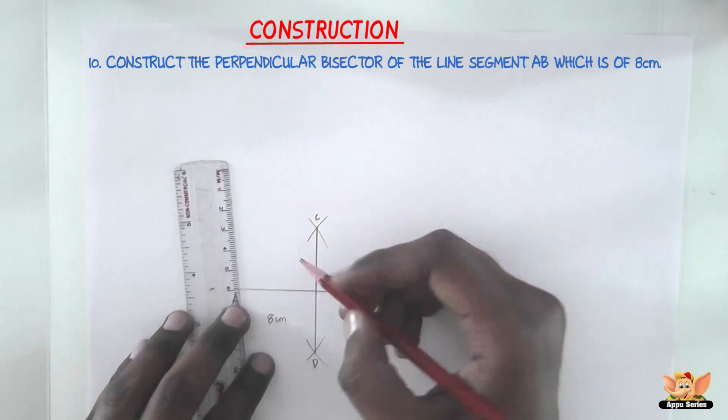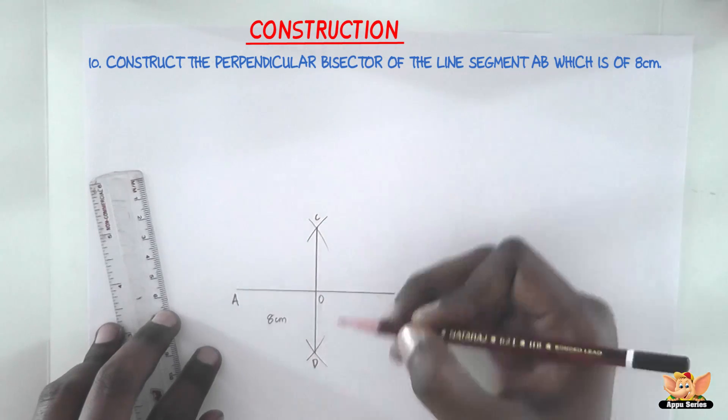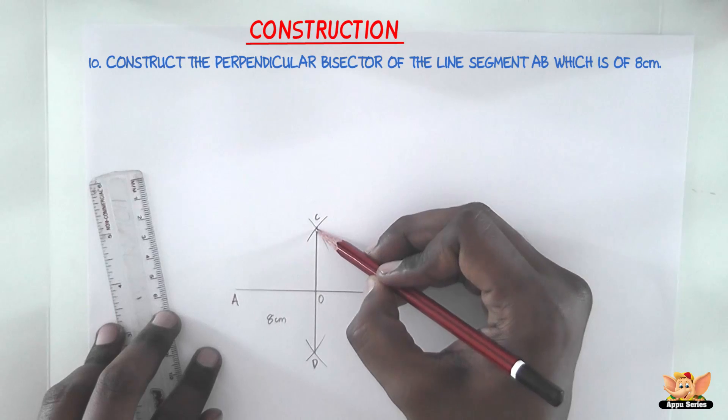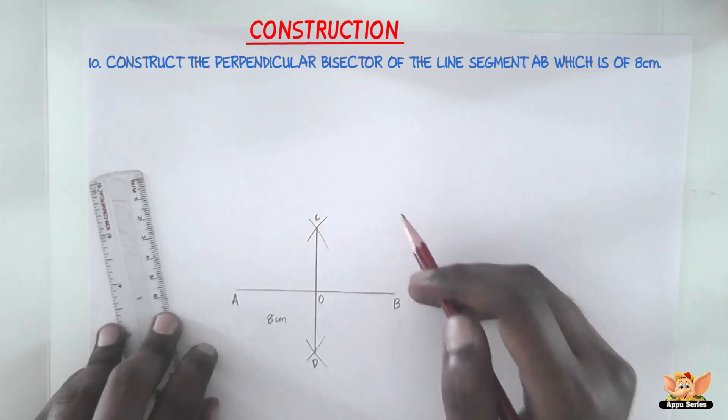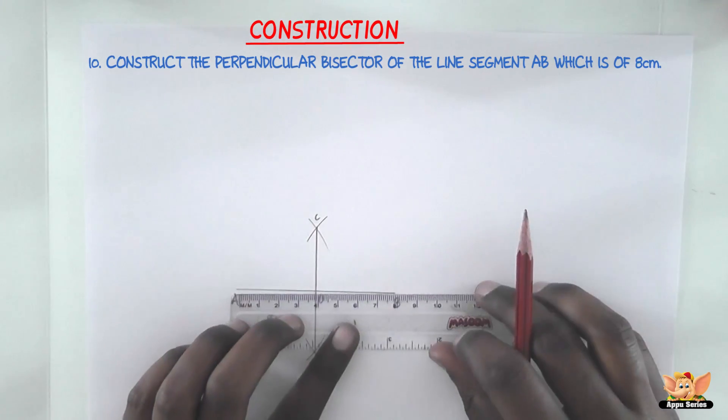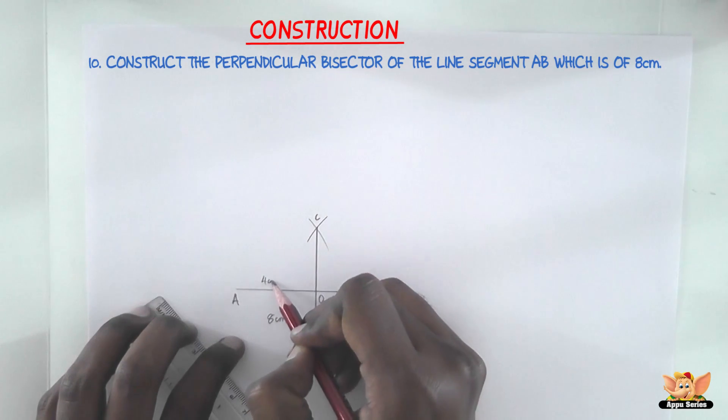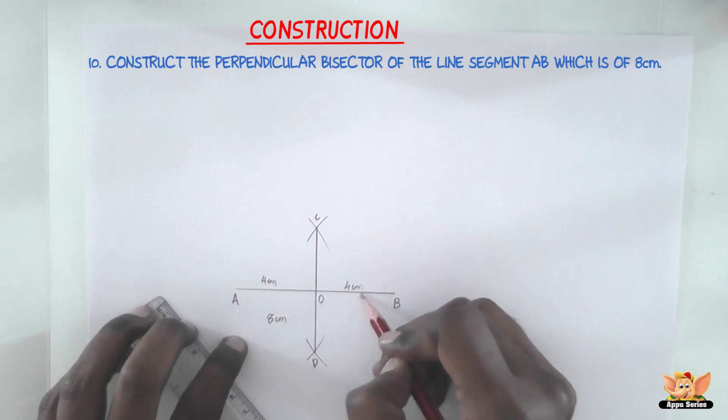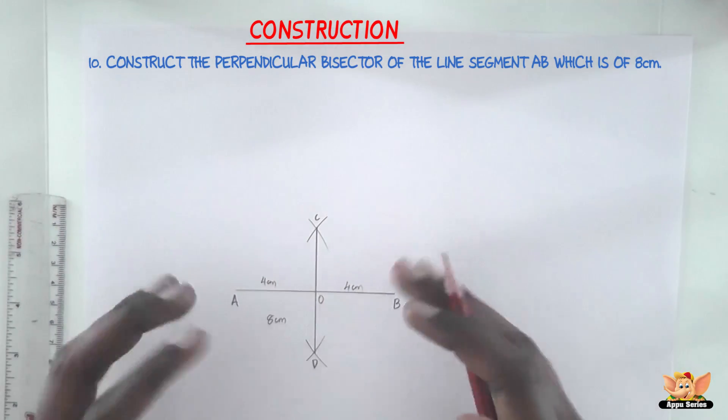So this line intersects the line segment AB at O, and so the line CD is the perpendicular bisector of the line AB. We can also see that the perpendicular bisector divides AB into a line of 4 cm and 4 cm which equals 8 cm. So it's divided 8 cm equally into 4 and 4.